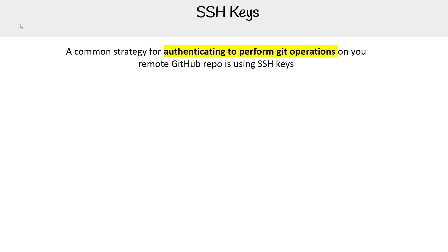A common strategy for authenticating to perform Git operations on your remote GitHub repo is by using an SSH key. You're definitely going to want to use this because it is a great way to work with Git in your local developer environment. It's definitely the way that I like to use it, as opposed to using a personal access token.